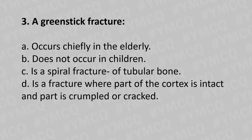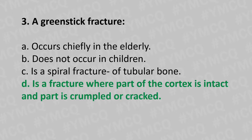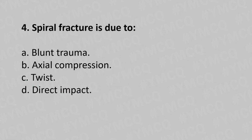Moving to our third question: a greenstick fracture — option A occurs chiefly in the elderly, option B does not occur in children, option C is a spiral fracture of the tubular bone, option D is a fracture where part of the cortex is intact and part is crippled or cracked. The answer is option D.